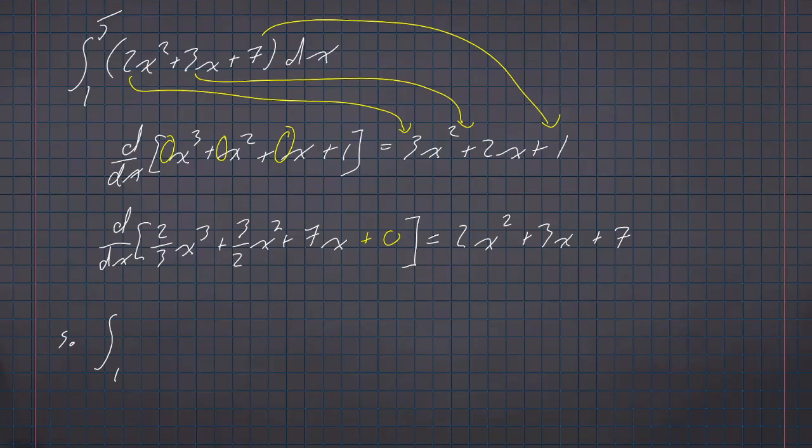So with that, the integral from one to five of 2x² + 3x + 7 with respect to x is going to be the function (2/3)x³ + (3/2)x² + 7x evaluated at one and evaluated at five.